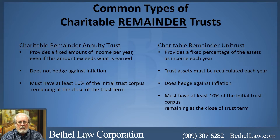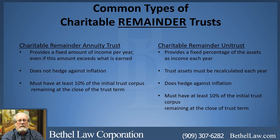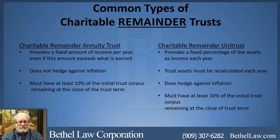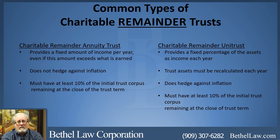A charitable remainder unitrust is a bit the opposite of the annuity trust, in that it provides the family a fixed percentage of the assets as income per year. Therefore, the charitable remainder unitrust hedges against inflation, since every year you recalculate and re-value the property to determine your percentage. For real estate sitting in the trust producing rental income, valuing it every year can be cumbersome, which is why we recommend actually selling the real estate within the trust and investing the sales proceeds into a brokerage account that's easy to evaluate annually.